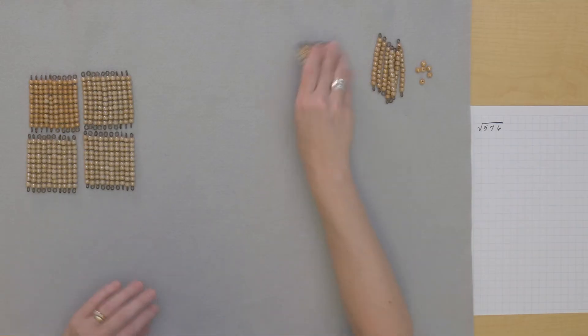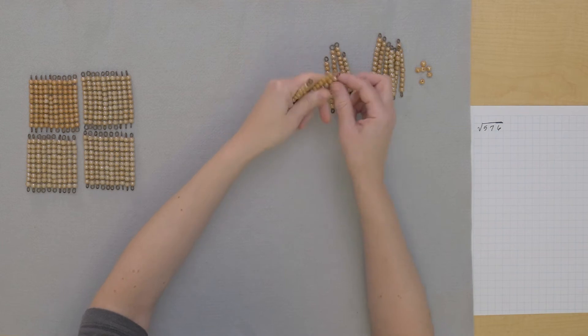So I could exchange this for tens. So let's do that. Three, four, five, six, seven, eight.